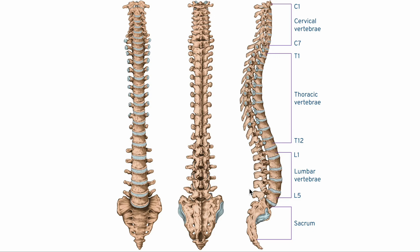You can see those knobbly bits sticking out a little bit more easily in the side-on view. These little bits that stick out the side are attachment points for ligaments and muscles to control the movement of the back. This side-on view is one I quite like because it shows you that our backs have these natural curves in them.